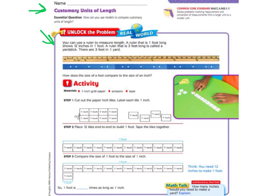A ruler that is 1 foot long shows 12 inches in 1 foot. A ruler that is 3 feet long is called a yardstick. There are 3 feet in 1 yard.